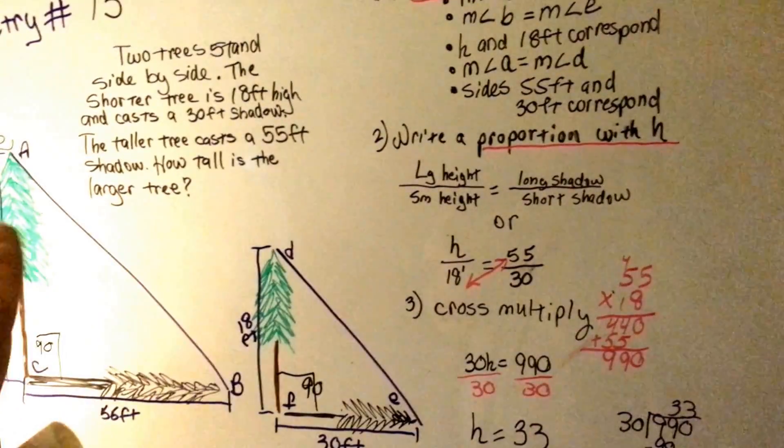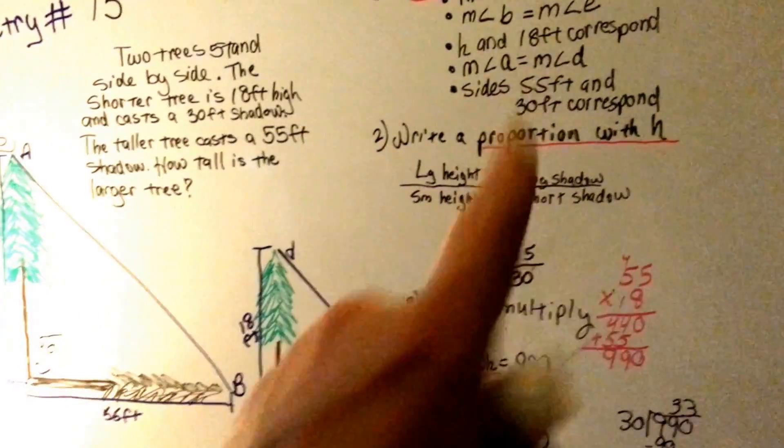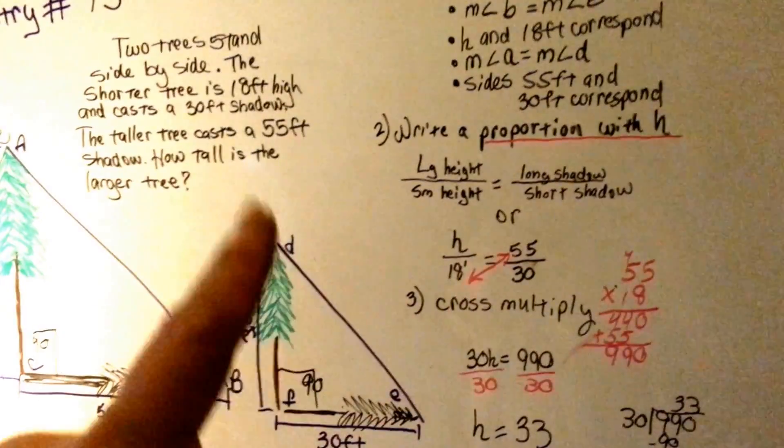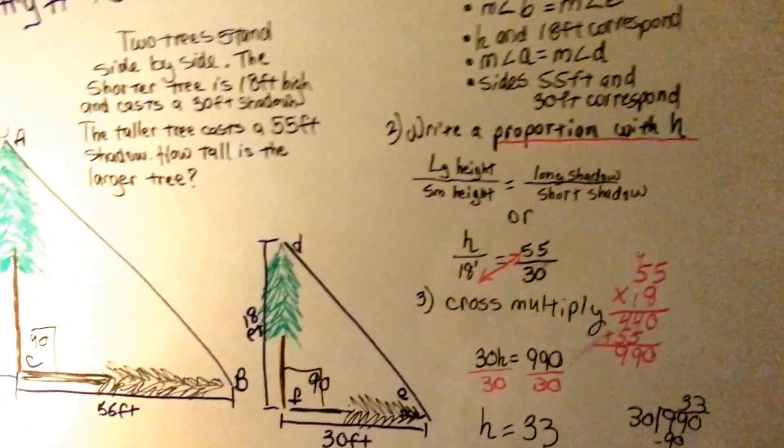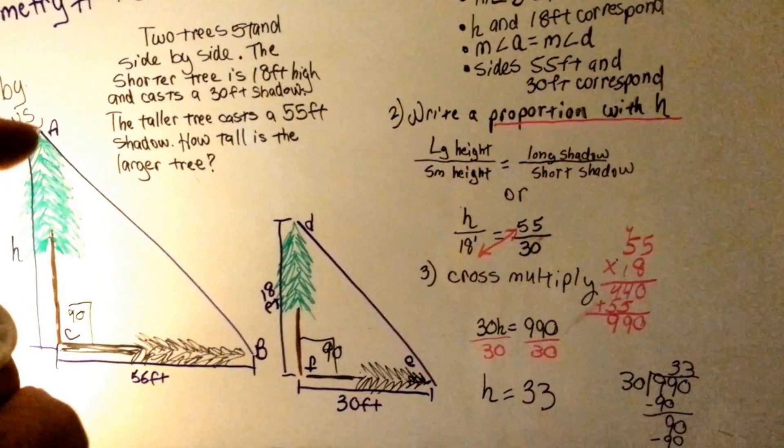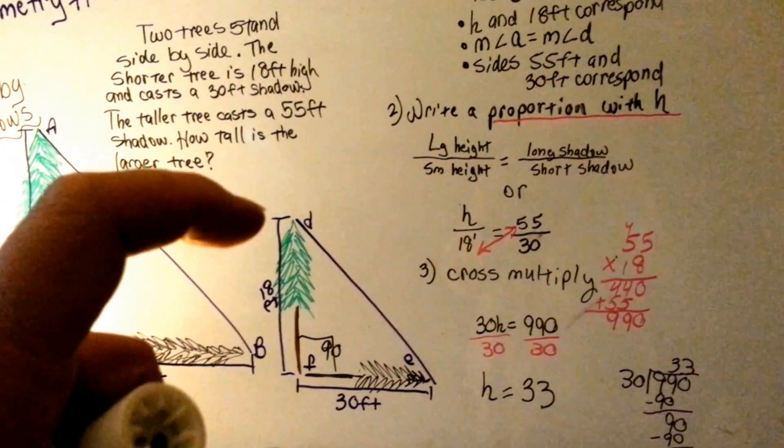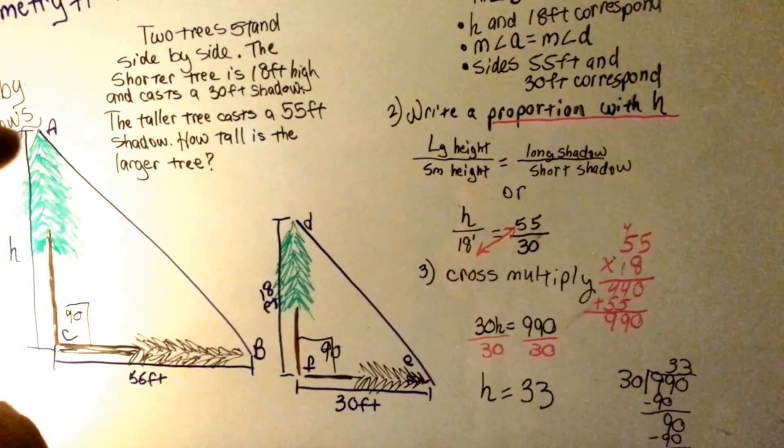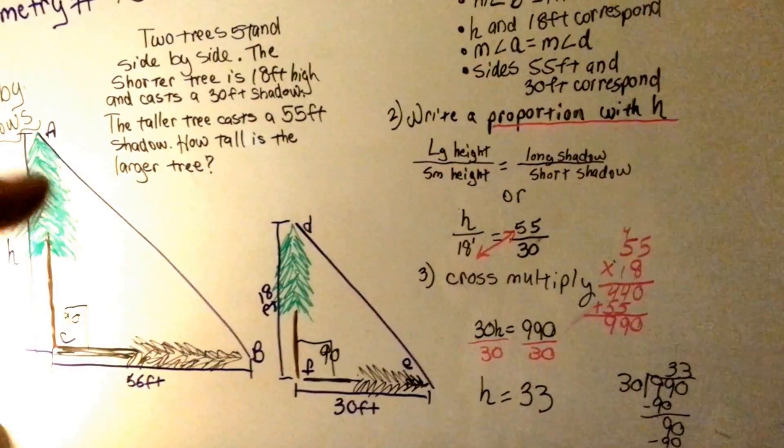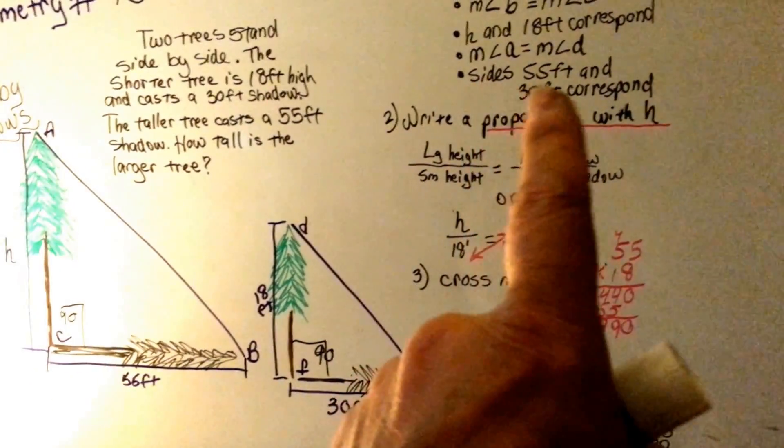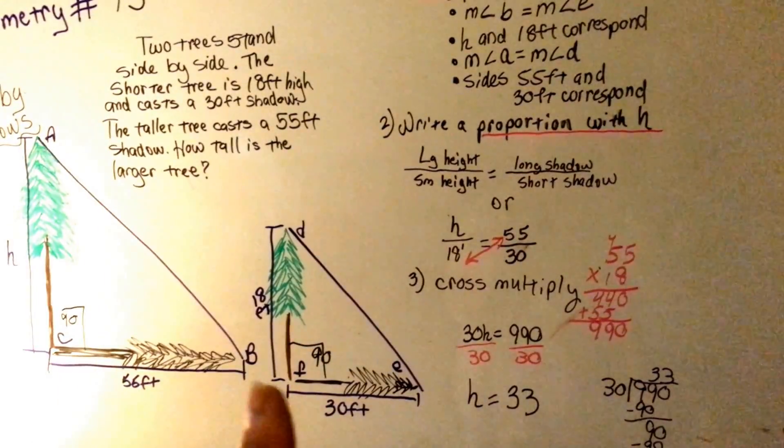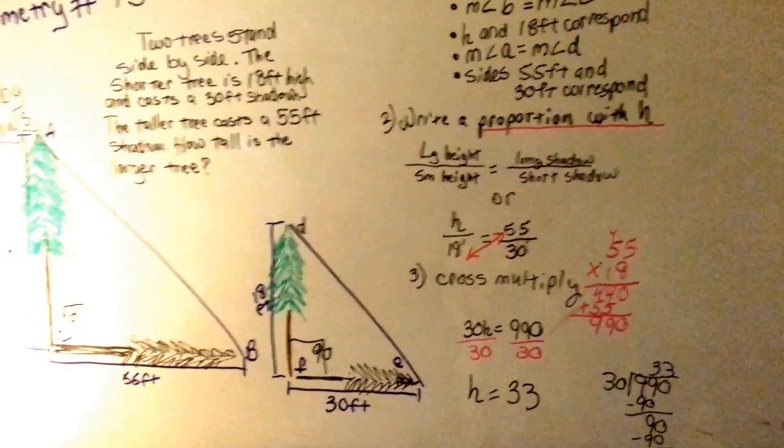Height for here and 18 feet here are corresponding sides. They correspond. The measure of angle A, that's this guy at the top of the tree, and the measure of angle D are equal. These two angles have the same measurement in degrees. The sides, 55 feet here, the shadow, and the 30 feet are corresponding sides.